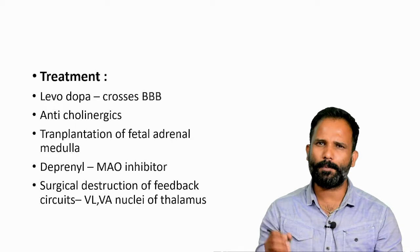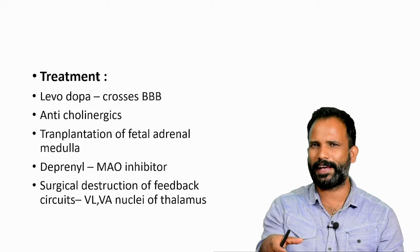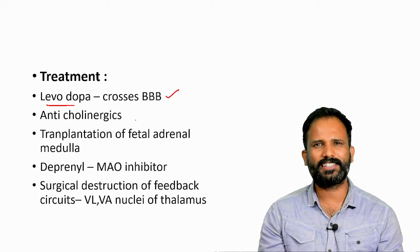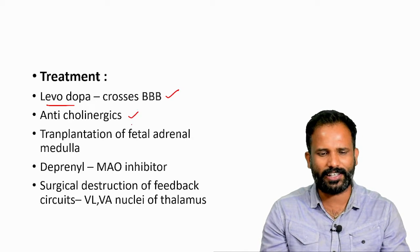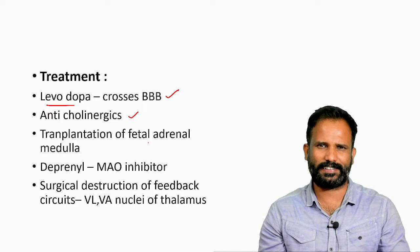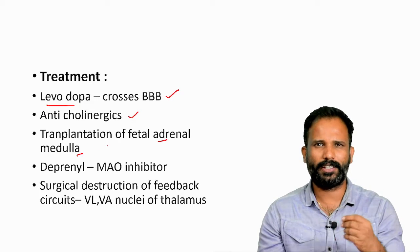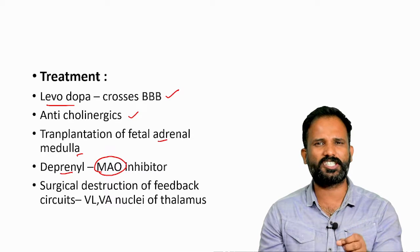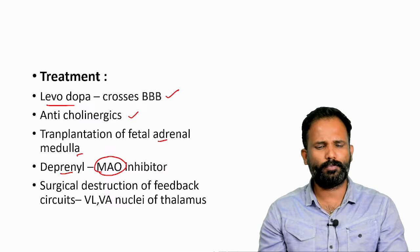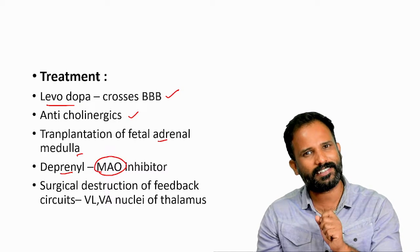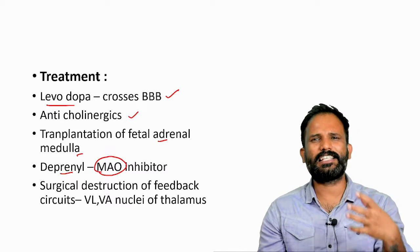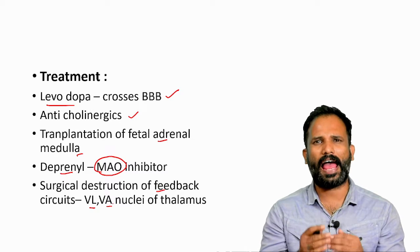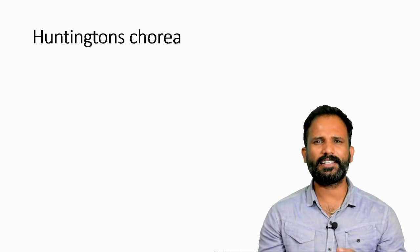Treatment of Parkinsonism: since dopamine is depleted, it must be supplemented, but dopamine cannot cross the blood-brain barrier, so levodopa is given instead. Since increased acetylcholine also contributes, anticholinergics can be given. Other treatments include transplantation of aborted fetal adrenal medulla to secrete dopamine, and deprenyl, a monoamine oxidase inhibitor (MAOI) — since MAO breaks down dopamine, inhibiting it allows dopamine to persist longer. Alternatively, feedback circuits can be disrupted by destroying ventrolateral and ventro-anterior nuclei of the thalamus.